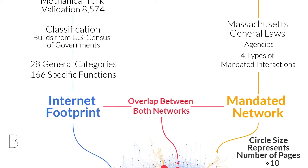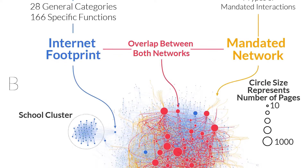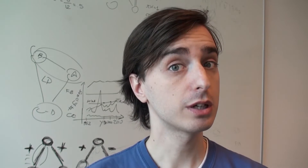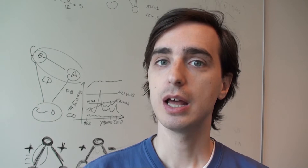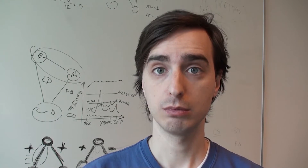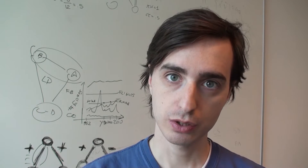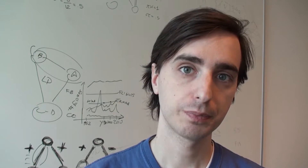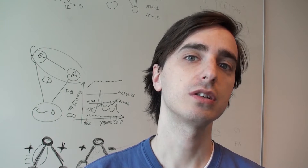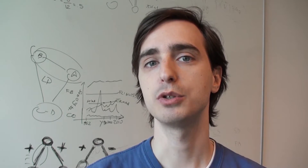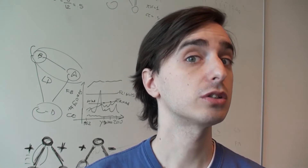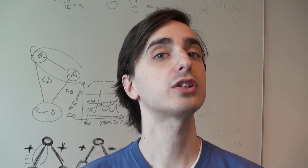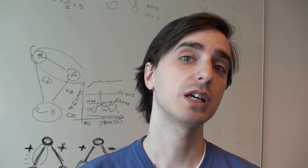To map the online footprints of US state governments, we used web crawling — a program that downloaded all the web pages of all public agencies and the links between them. We started by building a directory of public agency websites by looking at information provided by state governments online, then integrated it with information from non-profit agencies and Wikipedia. Each agency became a node in our network and the links between them the connections — if this was Facebook, each agency would be a person and the hyperlinks would be friendships. We then used the words inside each agency's website to understand which function or functions the agency implemented, which allowed us to distinguish, for instance, schools from libraries or environmental protection agencies from public utilities.